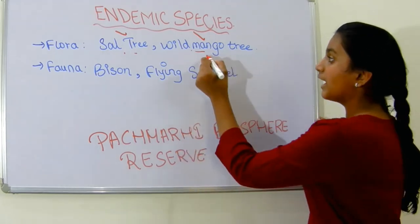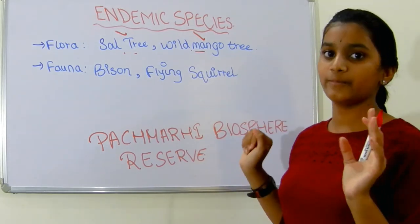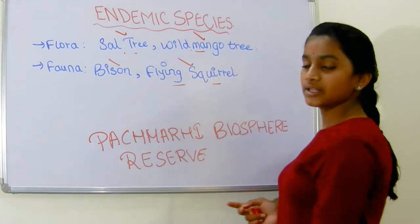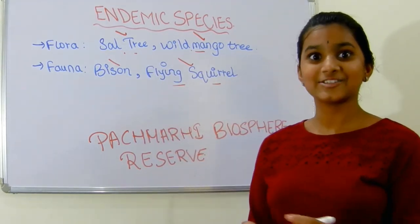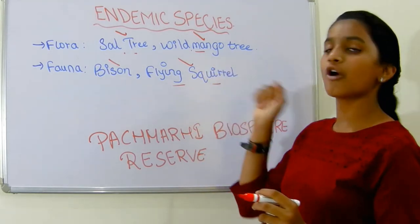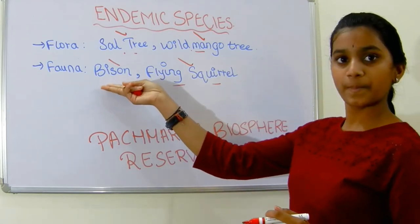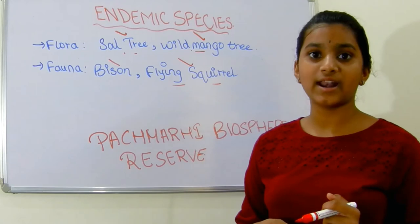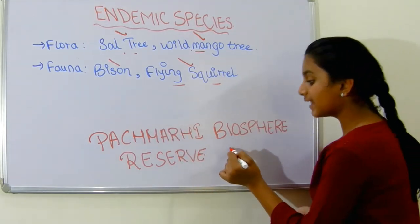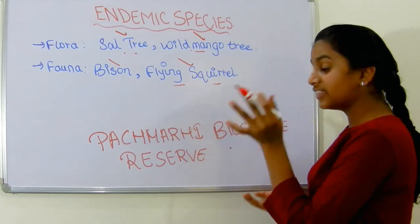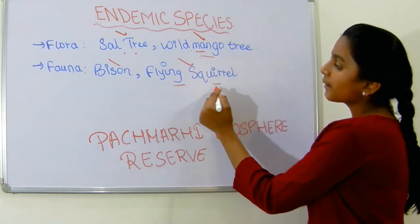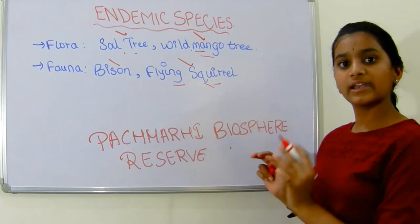So this is the endemic flora. Now for fauna, let us see — we have the flying squirrel. Have you seen a flying squirrel? This flying squirrel also belongs to this reserve. So these are the endemic flora and fauna of Pachmari Biosphere Reserve. They are endemic to this reserve.